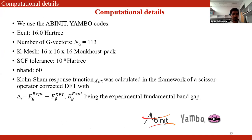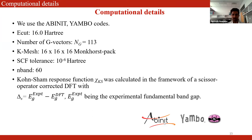Here are the computational details. We use the Abinit code for ground-state DFT calculations and the YAMBO code for excited-state calculations. We choose an energy cutoff of 16 Hartree, 130 G-vectors, and a k-mesh of 16×16×16 Monkhorst-Pack. The SCF tolerance is 10⁻⁶ Hartree. The total number of occupied and unoccupied bands is 60. The Kohn-Sham response function was calculated within scissors-corrected DFT, using the experimental fundamental band gap, since DFT underestimates the band gap.